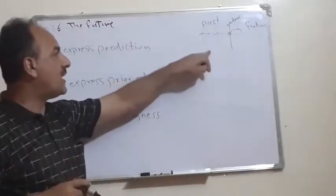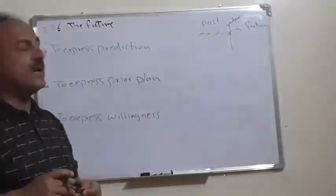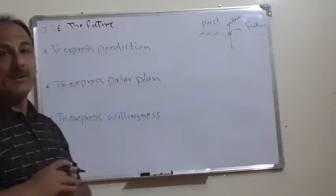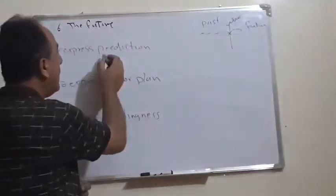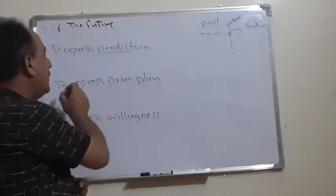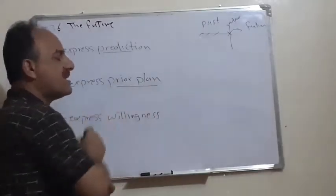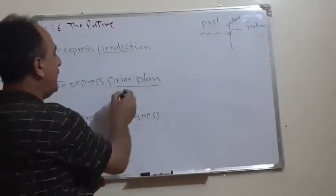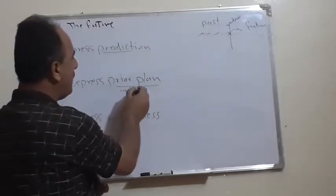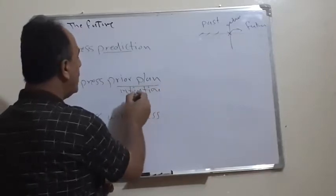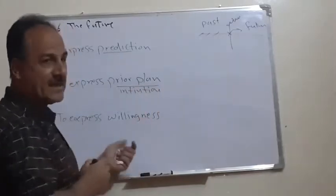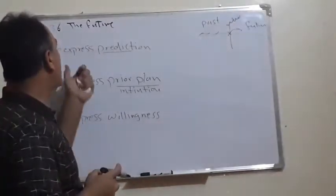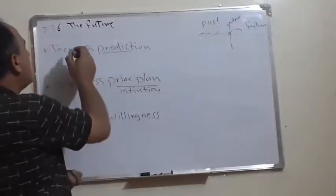This future can be represented according to the meaning into three cases: either we are talking about a prediction, or what we call a prior plan — sometimes we call it intention — or finally, if we want to express willingness, meaning we wish or hope to do something.